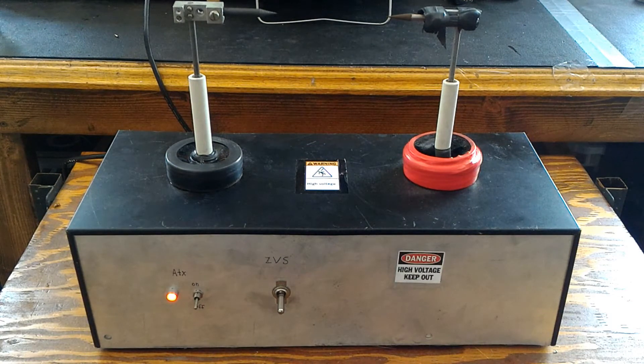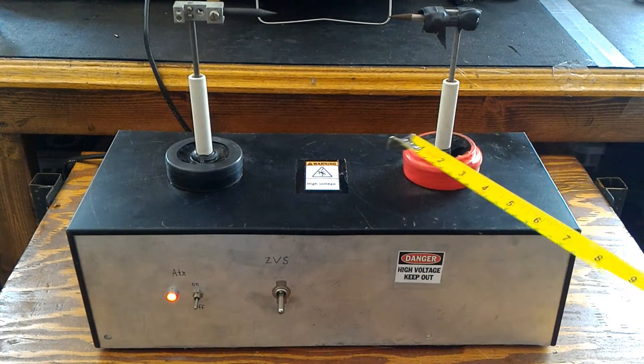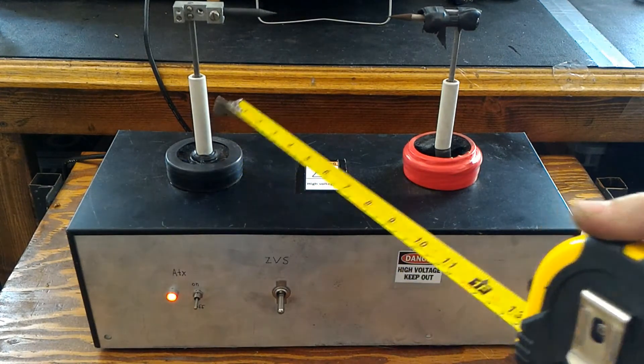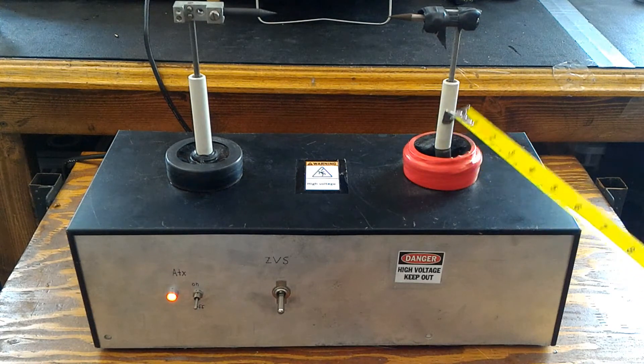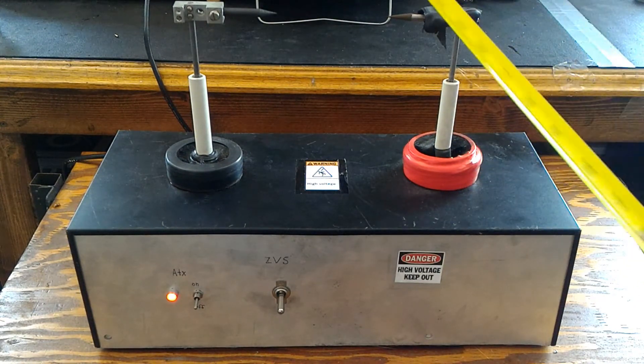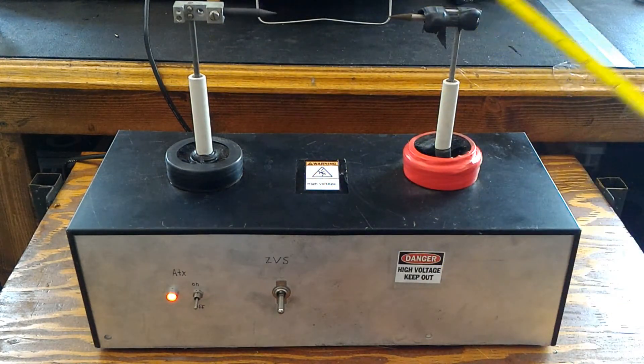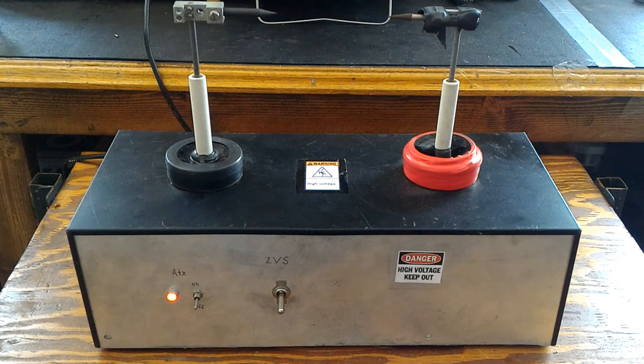So essentially what we have is two electrodes here. This is our ground, aka negative, and this is our positive. So conventional current - electrons come out from here. Electron flow from negative to positive, whatever you choose. Yes, there's two types of currents: conventional and electron flow.